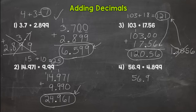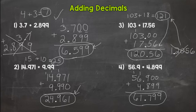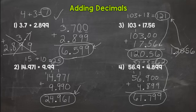Number 4 — line them up, placeholder zeros, addition sign, we're ready to go. 17 — bring that decimal straight down. 7 plus 4 is 11. 6, 61 — and 799 thousandths. Let's do an estimation: 57 plus 5 equals 62. Is my estimation close to my actual answer? Yes. So we have a reasonable answer and we are good to go.